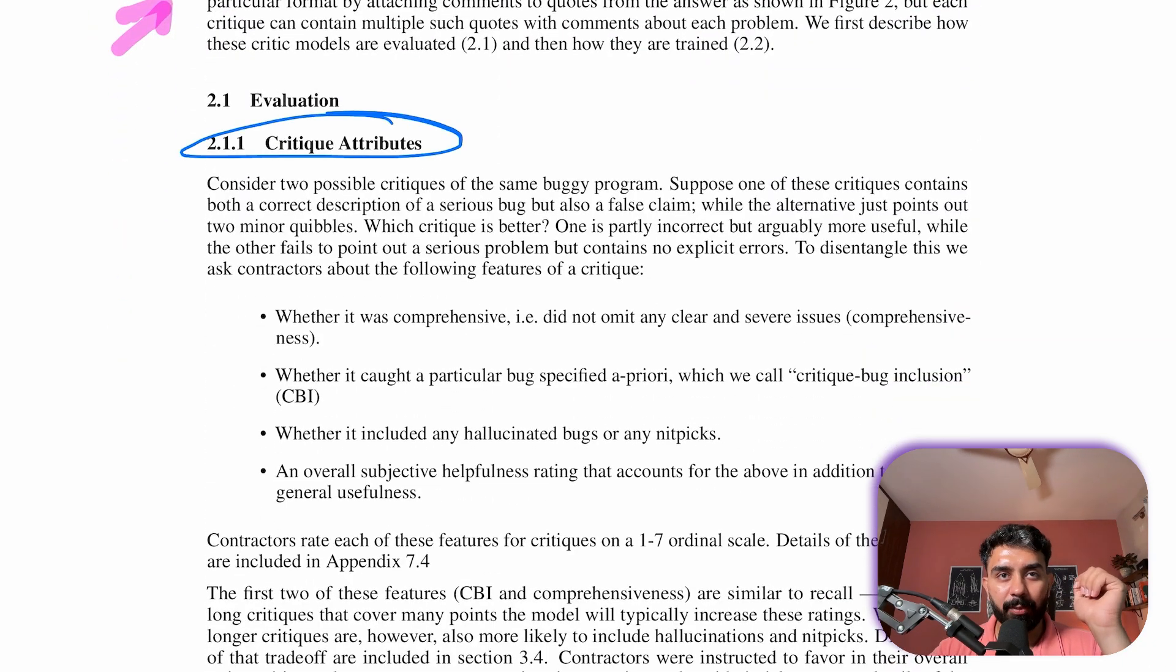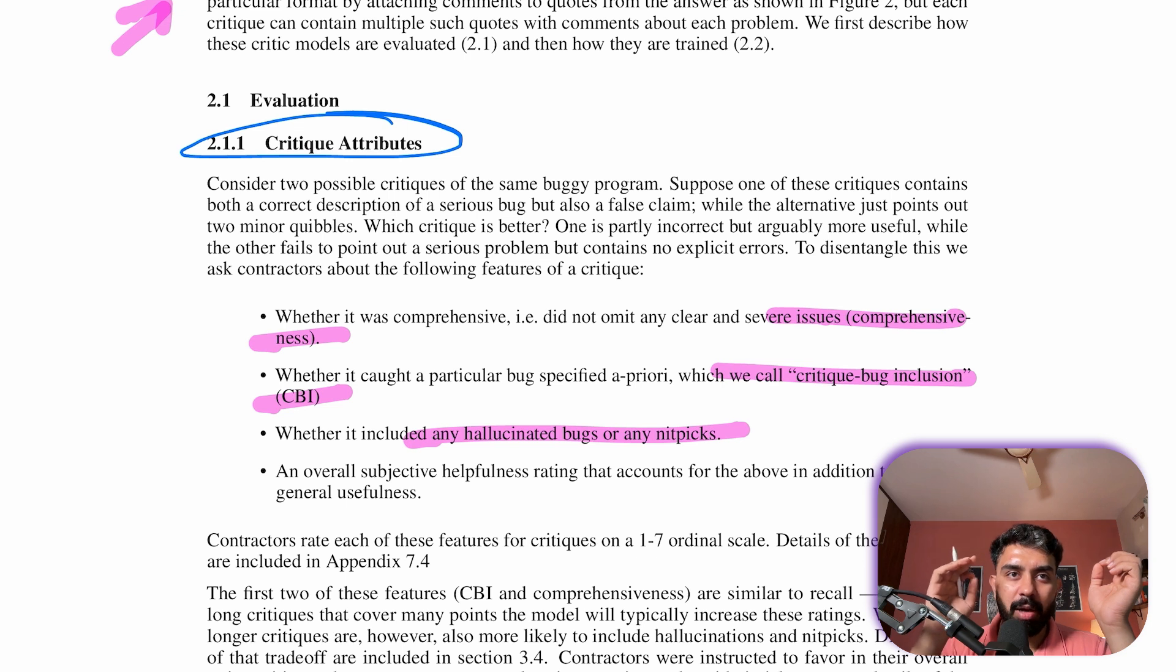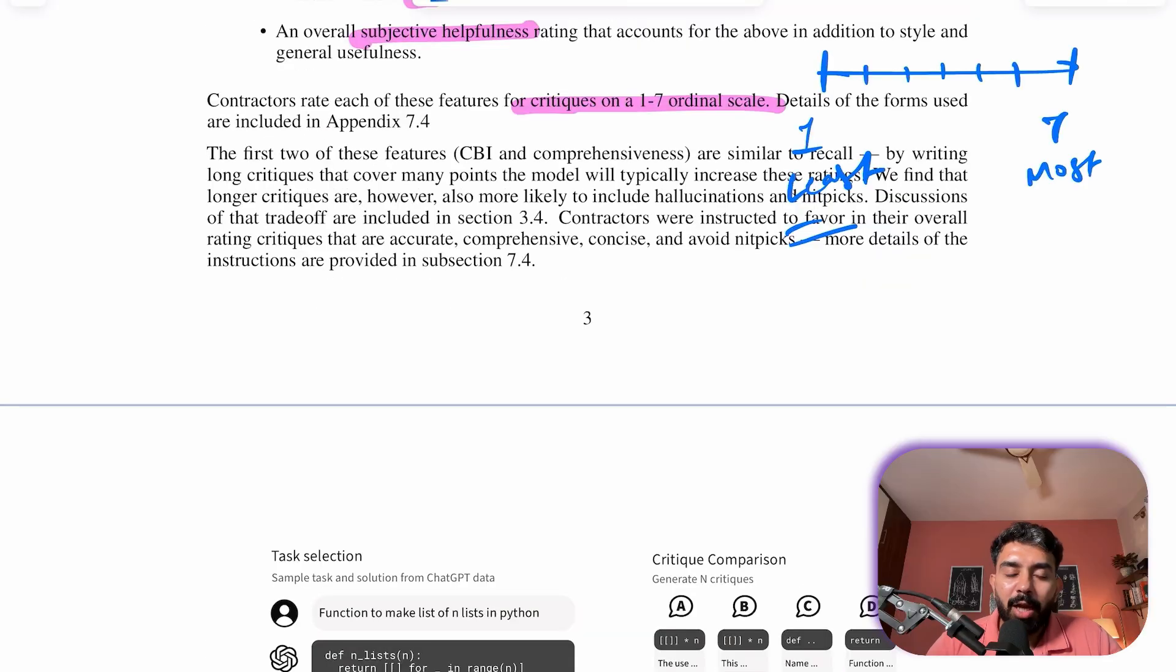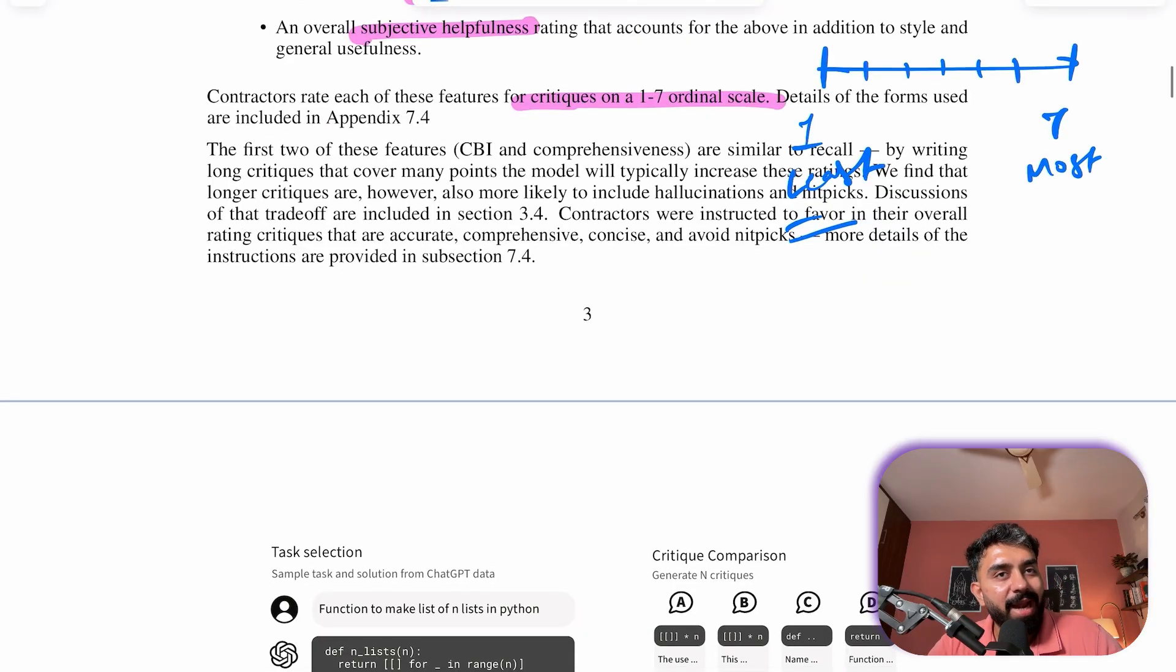And to, if we talk about the evaluation methods that they have, the steps that they have taken, first of all, if we talk about the critique attributes, the critiques include comments. Contractors are hired to evaluate these critiques based on comprehensiveness, inclusion of specific bugs (which is CBI), presence of hallucinated bugs or nitpicks, and overall subjective helpfulness.